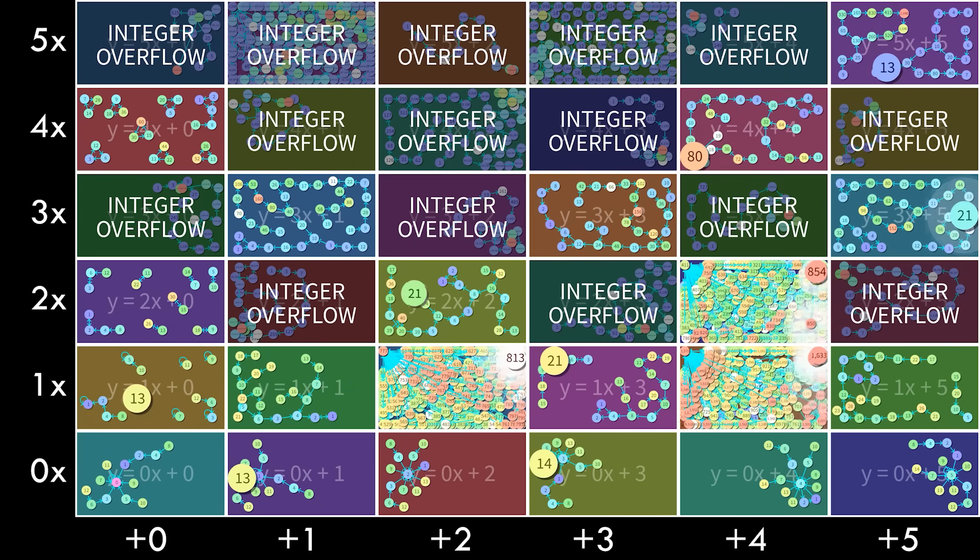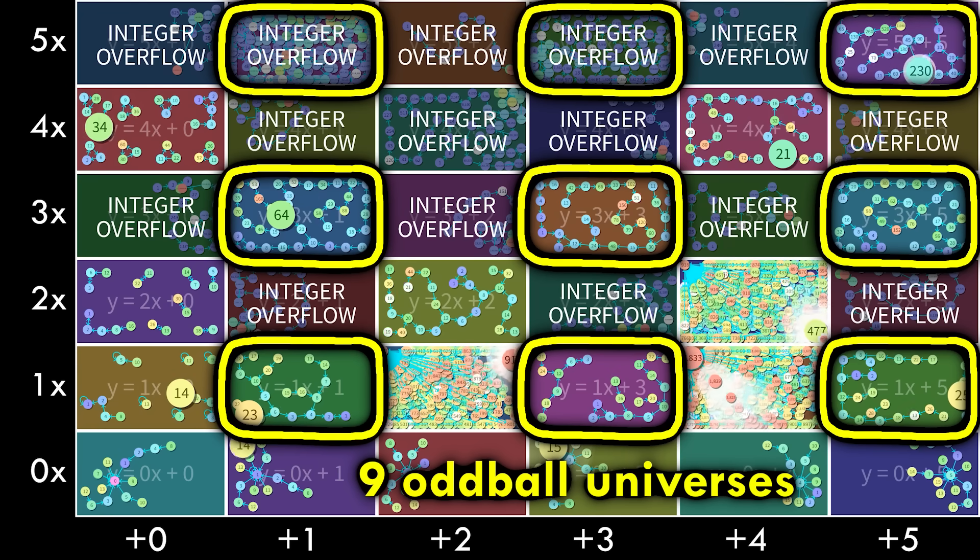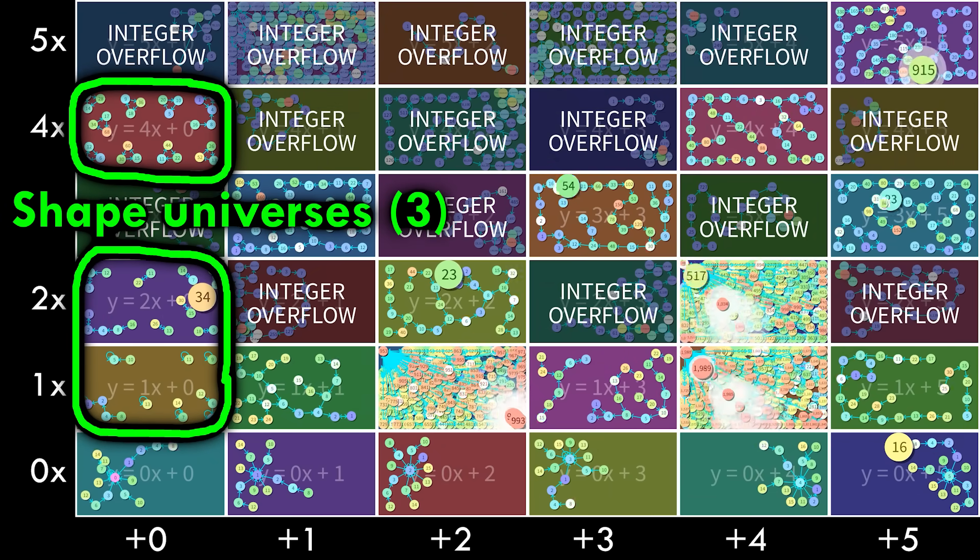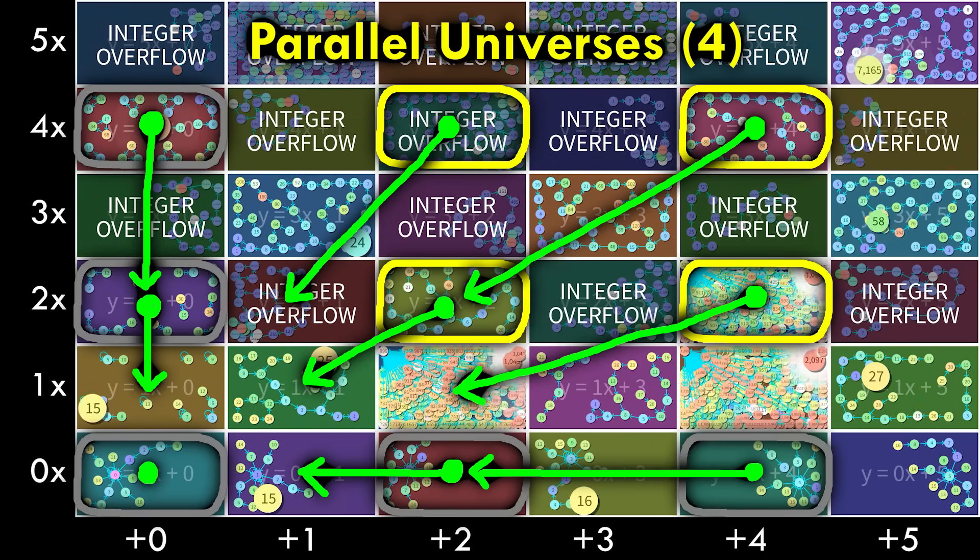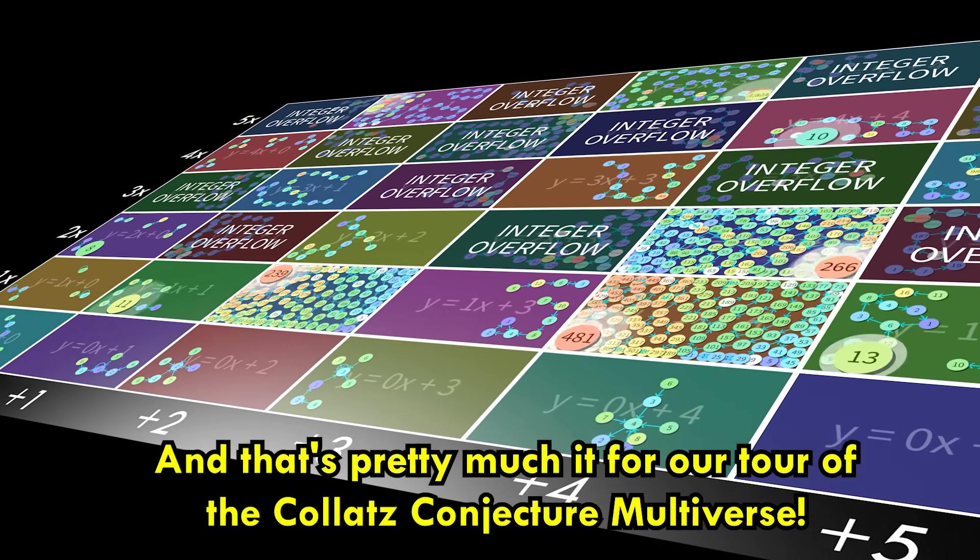So, when all is said and done, just 9 of our original 36 universes don't fit into the categories of hub and spoke, shapes, dumbass, or parallel. And that's pretty much it for our tour of the Collatz Conjecture Multiverse.